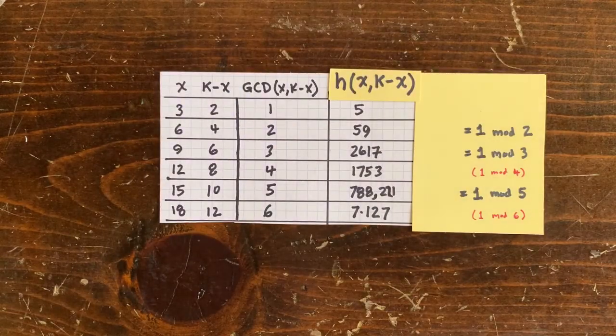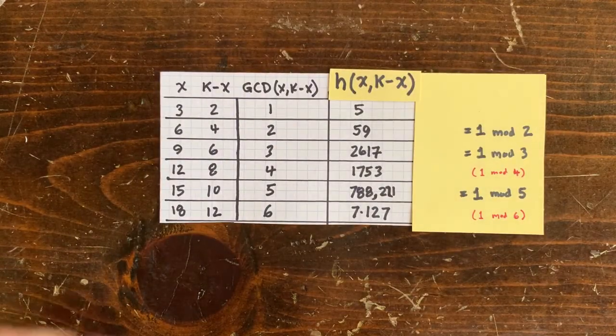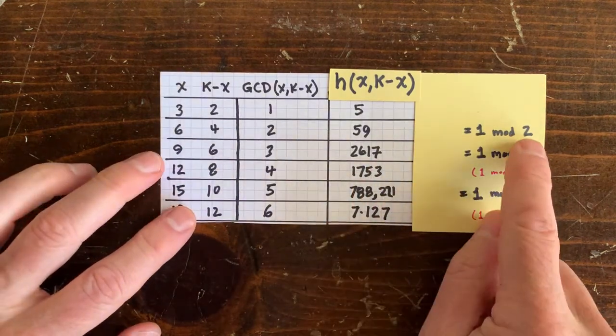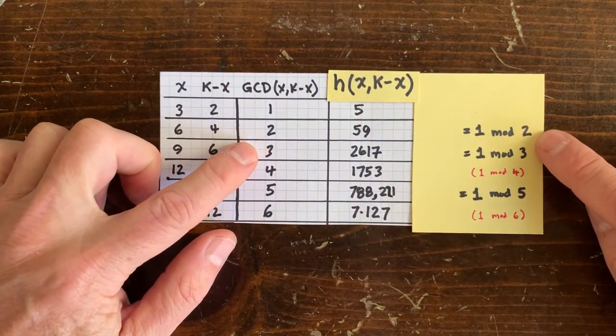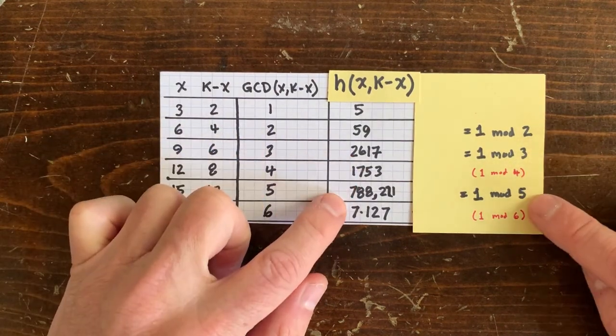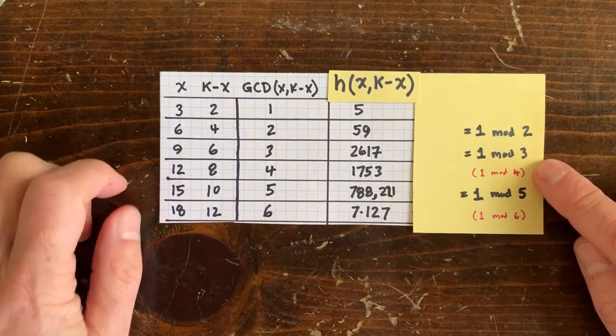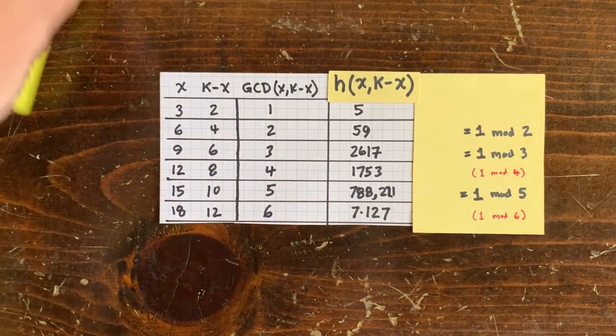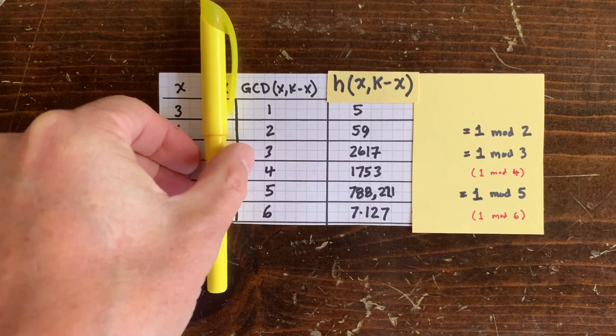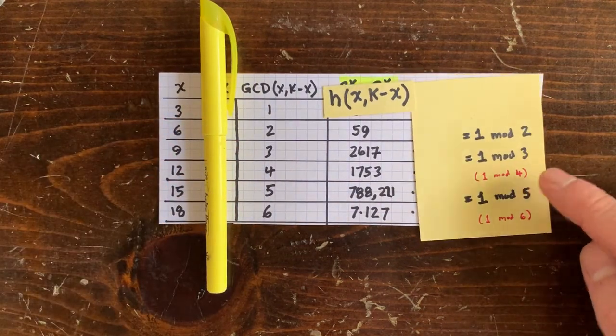Similar to before, we find that h values are 1 mod the greatest common divisor of x and k minus x. For sure when that greatest common divisor is prime. That's if you're a prime number of steps down the ray of sunshine. Looks like if you're a composite number of steps down, you're also probably 1 mod the gcd here in red.